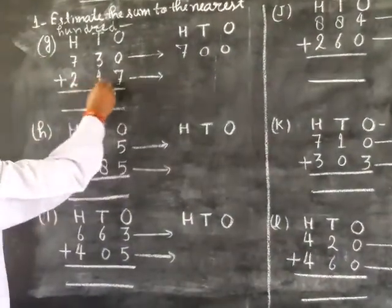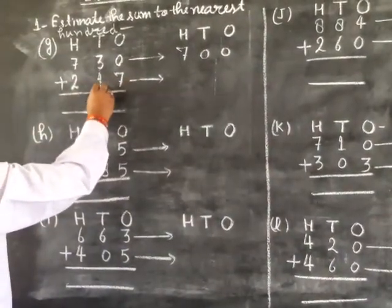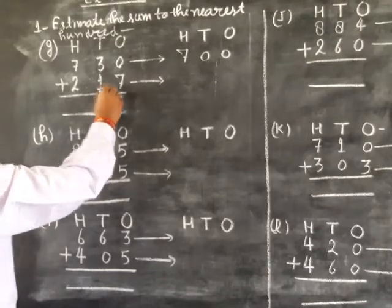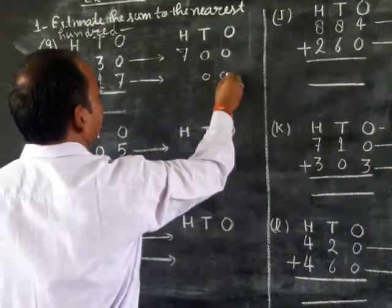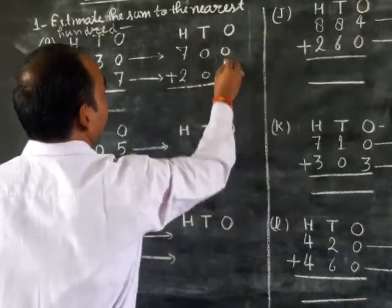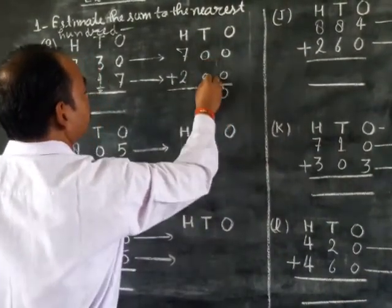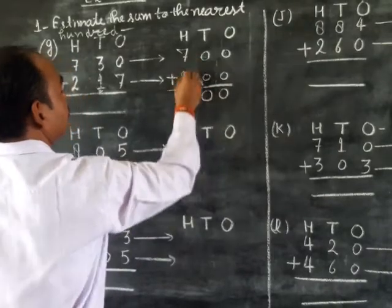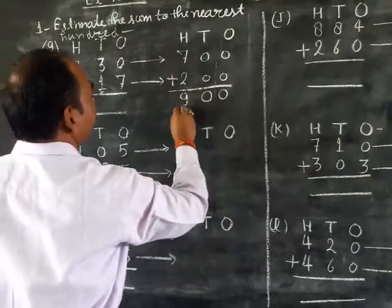For 730, tens place digit is less than 5. It's replaced by 0 and hundreds digit is same. Now we add: 0 plus 0 is 0, 0 plus 0 is 0, 7 plus 2 is 9. Answer is 900.